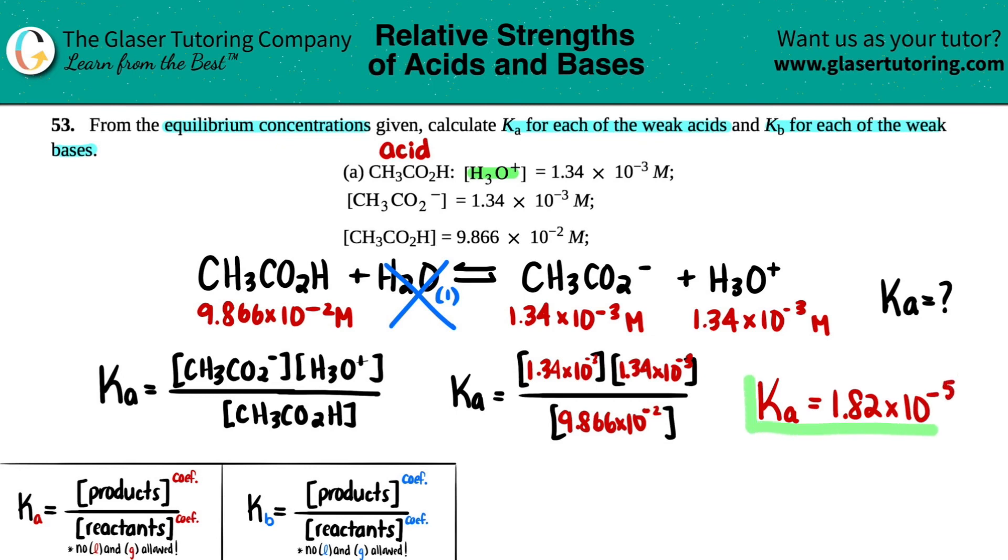And remember, Ka values do not have units. So this would be the answer. And as you can see, this is a weak acid. The Ka value is less than 1, so you're not really going to dissociate too much. And that's it. Hopefully this helped. Thank you so much for tuning in. Let me know in the comments if this helped you out or not. And I will see you in later lessons. Bye-bye.